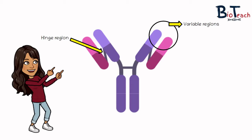The hinge region allows the two chains to open and close. The variable regions form the antigen binding sites, and each antibody can bind two antigen molecules. The antigen binding sites differ from one type of antibody to another. The huge number of antibody types is possible because the variable portion is coded by a relatively small number of genes that rearrange randomly to produce an estimated hundred million different combinations.